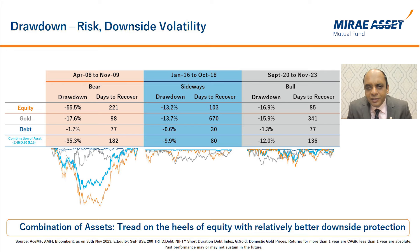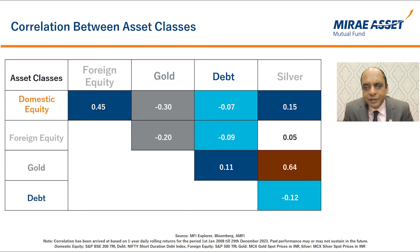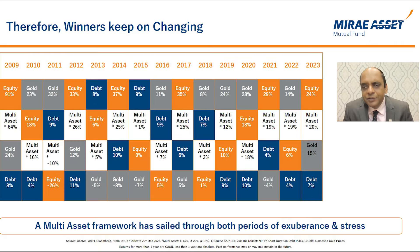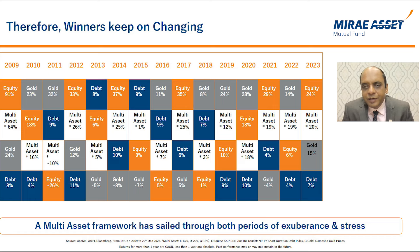Asset classes like equity, debt, and gold share a weak or negative correlation with each other — meaning they tend to behave differently in different market environments. Equity and gold share a negative correlation, as do equity and debt. Therefore, a combination of these asset classes can provide a relatively smoother investment experience. Over the past 15 years, equity was the top performer in six years, gold in seven years, and debt in two years. Since winners keep changing, a multi-asset framework follows a middle path and seeks to navigate through different market phases.